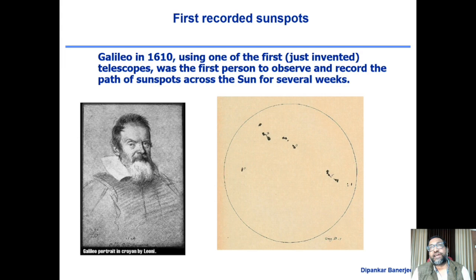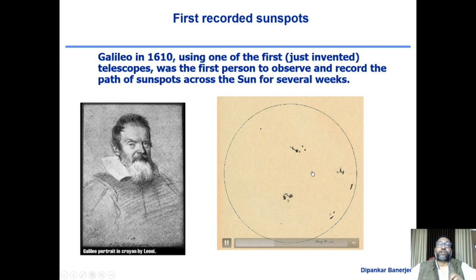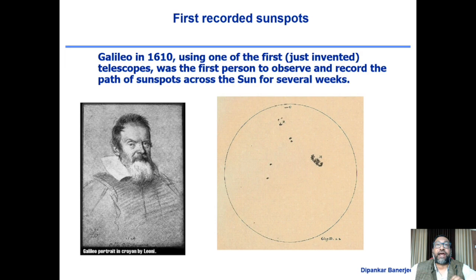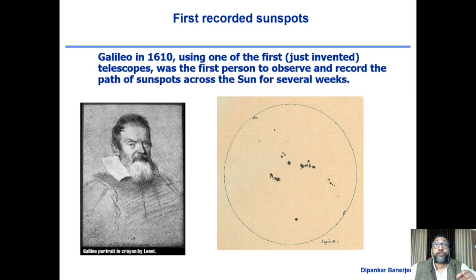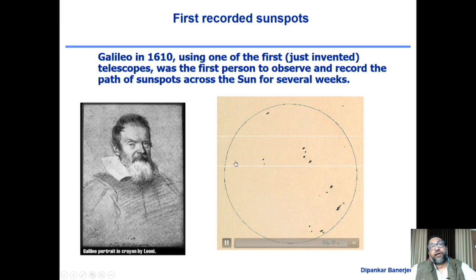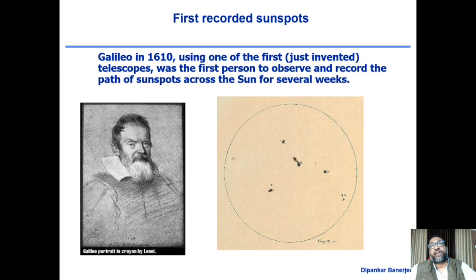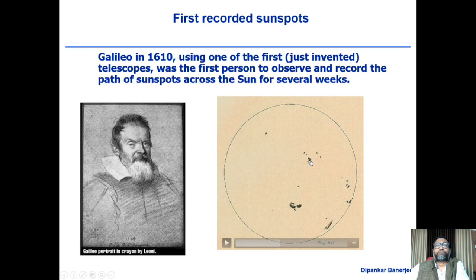These sunspots are small dark regions on the surface. This animation is taken from Galileo's hand drawings. He looked at the images and drew the positions of these spots on the surface. With surprise, he observed that if he compared an image of the sun on one day with the subsequent day, a particular object that was in one position had moved. That means the sun is also rotating. So Galileo noticed two things: the existence of sunspots — which are very strong magnetic field regions — and that the sun rotates around its own axis.